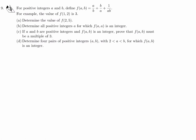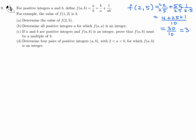For positive integers a and b, define f(a, b) to be a/b + b/a + 1/(ab). For example, f(2, 5) is 2/5 + 5/2 + 1/(2·5). Getting a common denominator of 10: that's 4 + 25 + 1 all over 10, which is 30 over 10, and that equals 3.